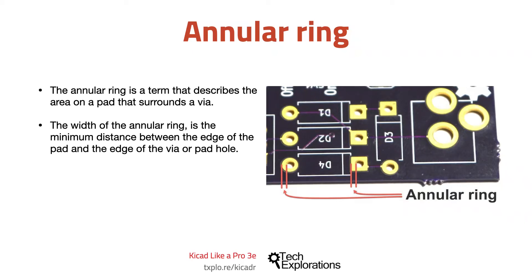The annular ring is a term that describes the area on a pad that surrounds a via. An important related metric is the width of the annular ring, which we define as the minimum distance between the edge of the pad and the edge of the via or pad hole. In the image in this slide, the width of two annular rings is indicated with the red two lines.